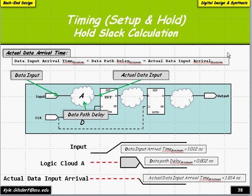Let's add some formalism. To figure out if we have hold slack, we need two elements: when the data actually arrives, and what's the fastest the input can toggle. If the input toggles fast, it might change right after the clock edge and might not meet hold timing. For example, if our input takes one nanosecond and it takes 0.802 nanoseconds to get through the logic, the actual input signal appears 1.814 nanoseconds later.